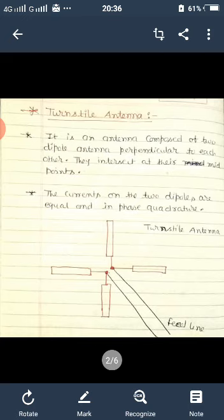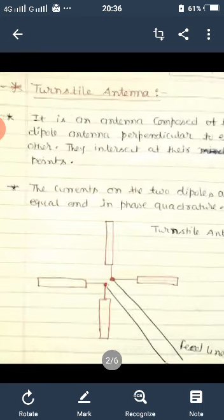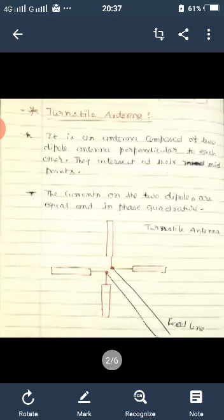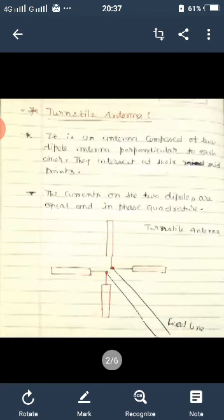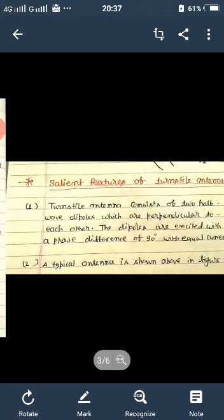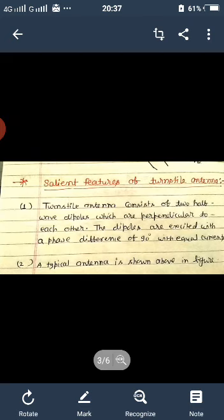You can see this is the diagram of turnstile antenna. So there are two dipole antennas perpendicular to each other. These are the feed lines. Now the salient features of the turnstile antenna.